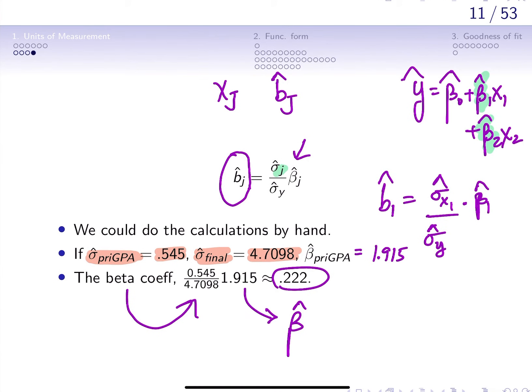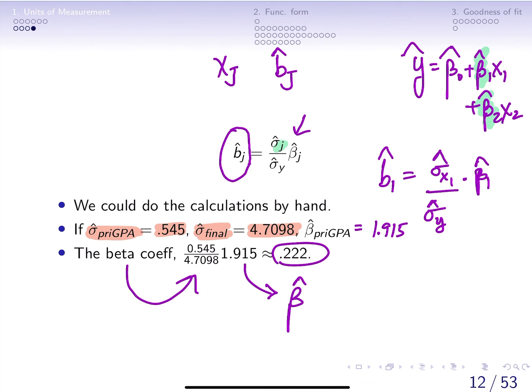So what do we know now? The interpretation of the beta coefficients is such that if x1, in this case prior GPA, increases by one standard deviation, then y, which is our final exam score, changes by b1 hat which is 0.222. Essentially what we're doing is we're measuring the effects not in terms of the original units of y or the xj but in standard deviation units.